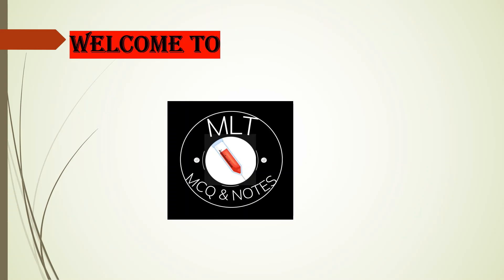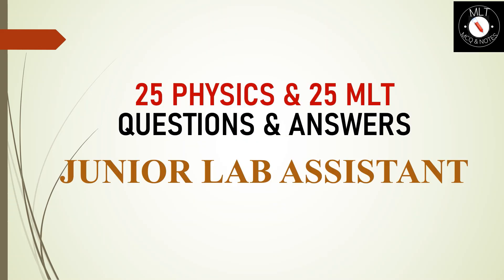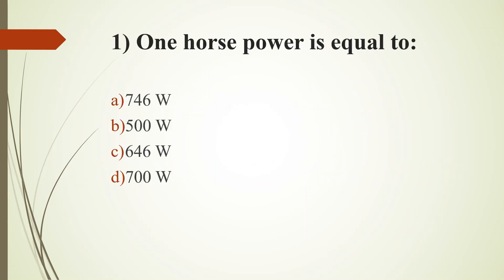Hi everyone, welcome to MLTM CQN Notes. In this video, I am discussing 25 physics and 25 MLT questions for junior labor session exam. First question, one horsepower is equal to: option A, 746 watts; option B, 500 watts; option C, 646 watts; option D, 700 watts. Answer is option A, 746 watts.